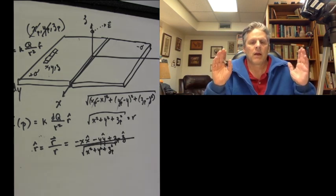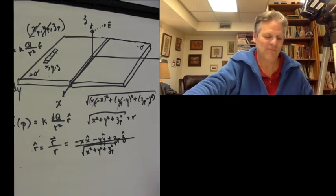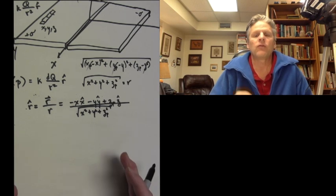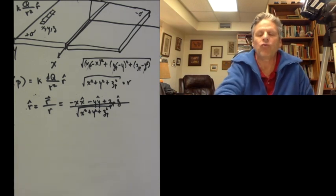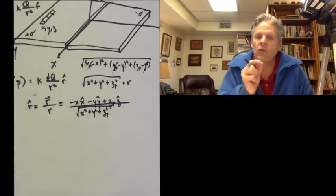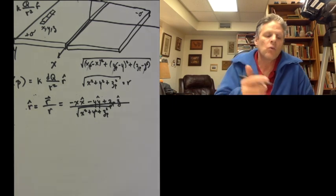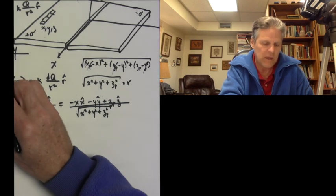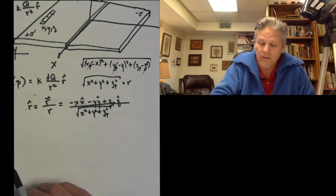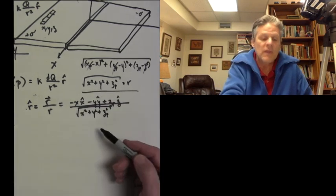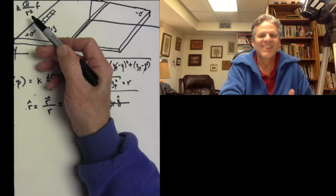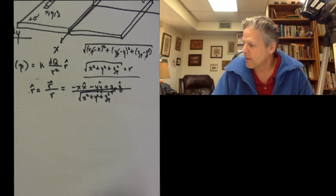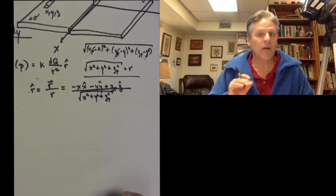Now we know r̂ — that's it. I know I keep saying this and you keep not believing me, but the problem is essentially done now. Our strategy is to calculate the electric field due to these two sheets by calculating the electric field due to every tiny spot on these two sheets. We know what q is, we know what r is, and we know what r̂ is. There's nothing more in this equation — that's how straightforward it is.